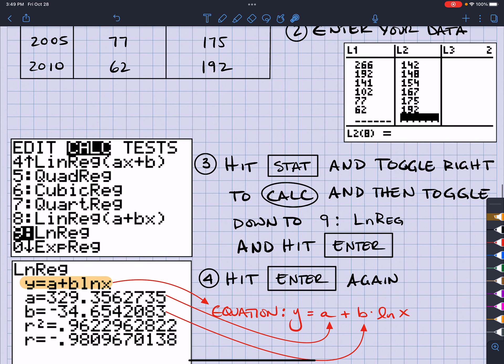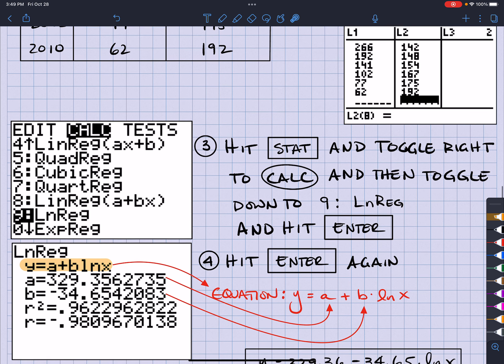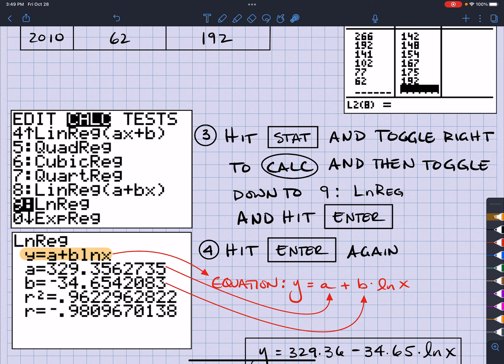Then, I'm going to go back into STAT again and toggle to the right and then toggle down until I get to the logarithmic regression. Okay. So, from the logarithmic regression, I'm going to hit ENTER and ENTER again because that's what I want. And, again, it gives me the formula here.